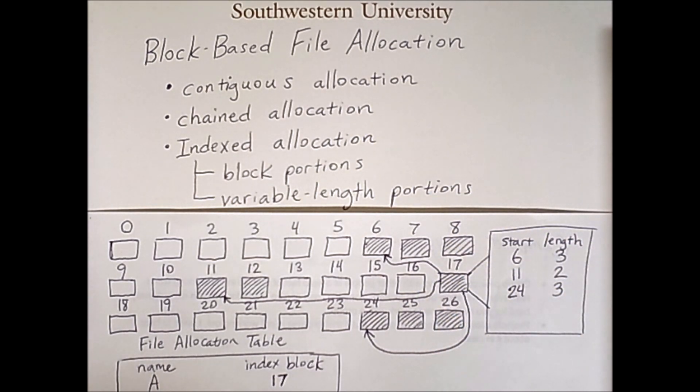Another issue in general with both index allocation approaches is that we need to have certain blocks on the disk that are index nodes. These nodes of course cannot be used to store file data anymore. So we're giving up a portion of the disk in order to make file access a bit more convenient.